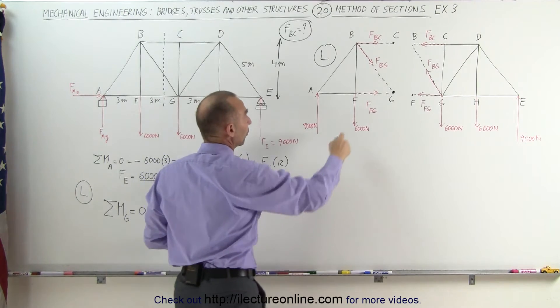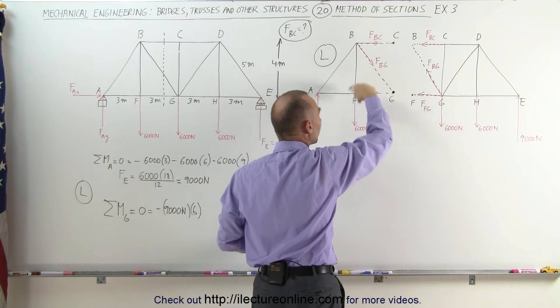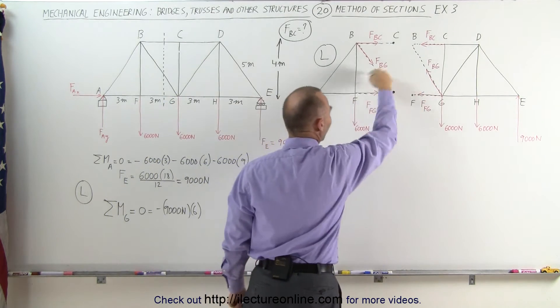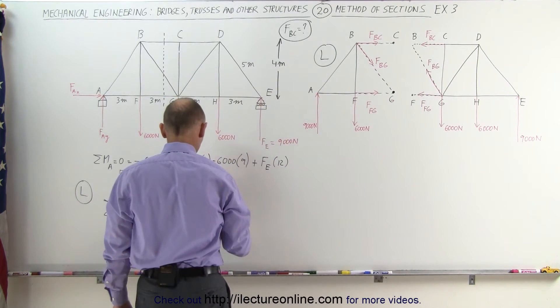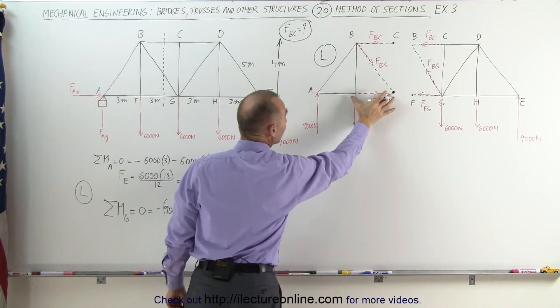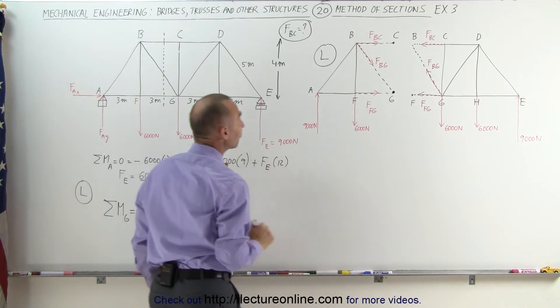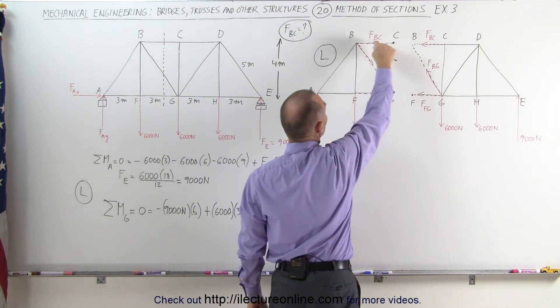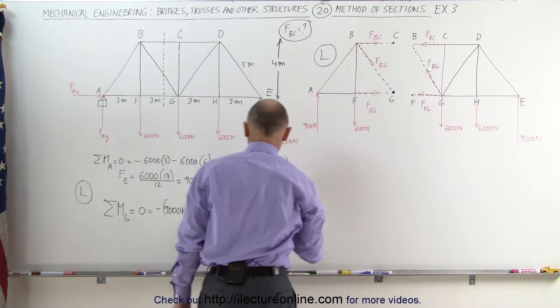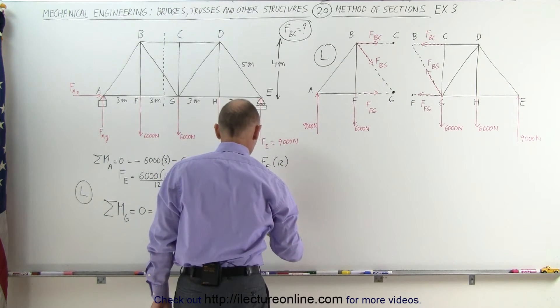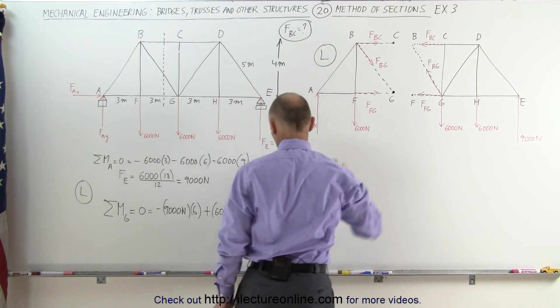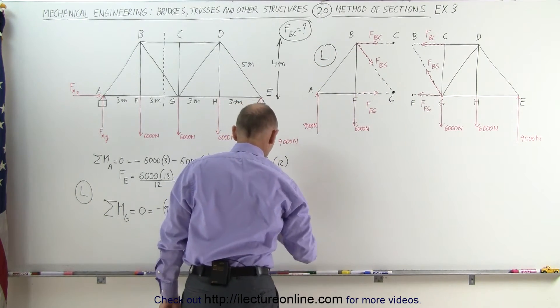A second force is this force right here, which gives us a counterclockwise moment. That's a positive 6,000 times the distance of 3 meters from F to G. And then finally we have one more, the unknown right here, that's FBC, gives us a clockwise, that's negative, negative FBC, multiplied times the distance from there to there is a 4 meter distance, as it's indicated right there.